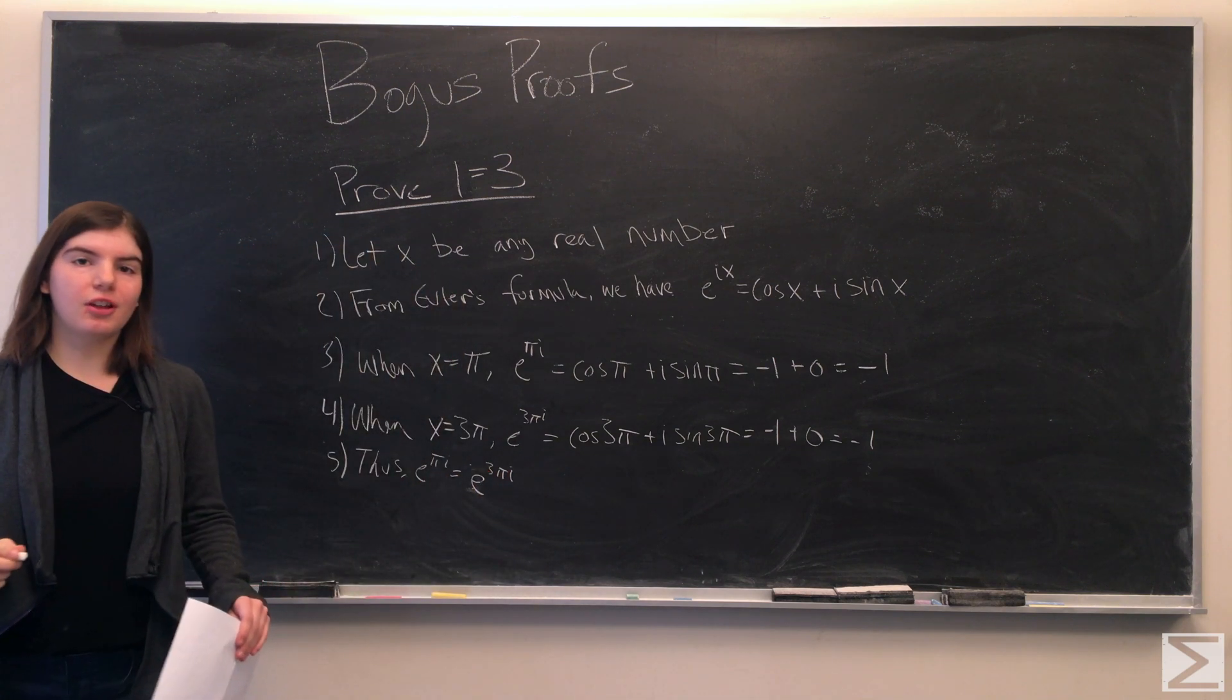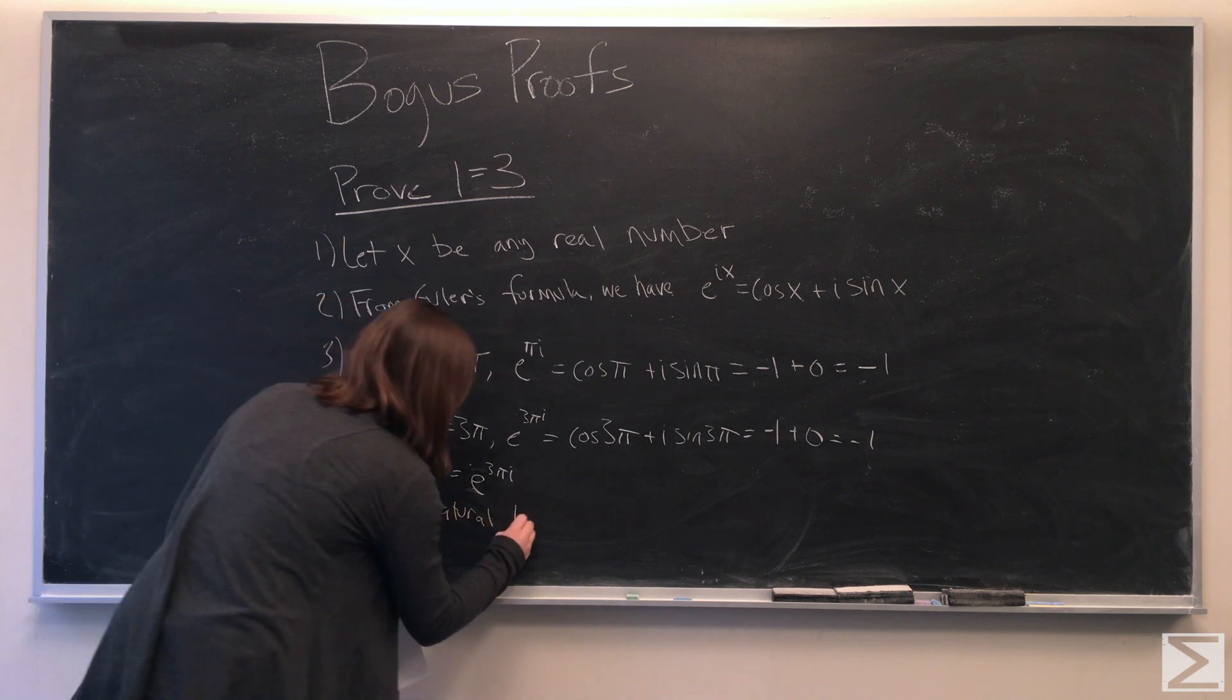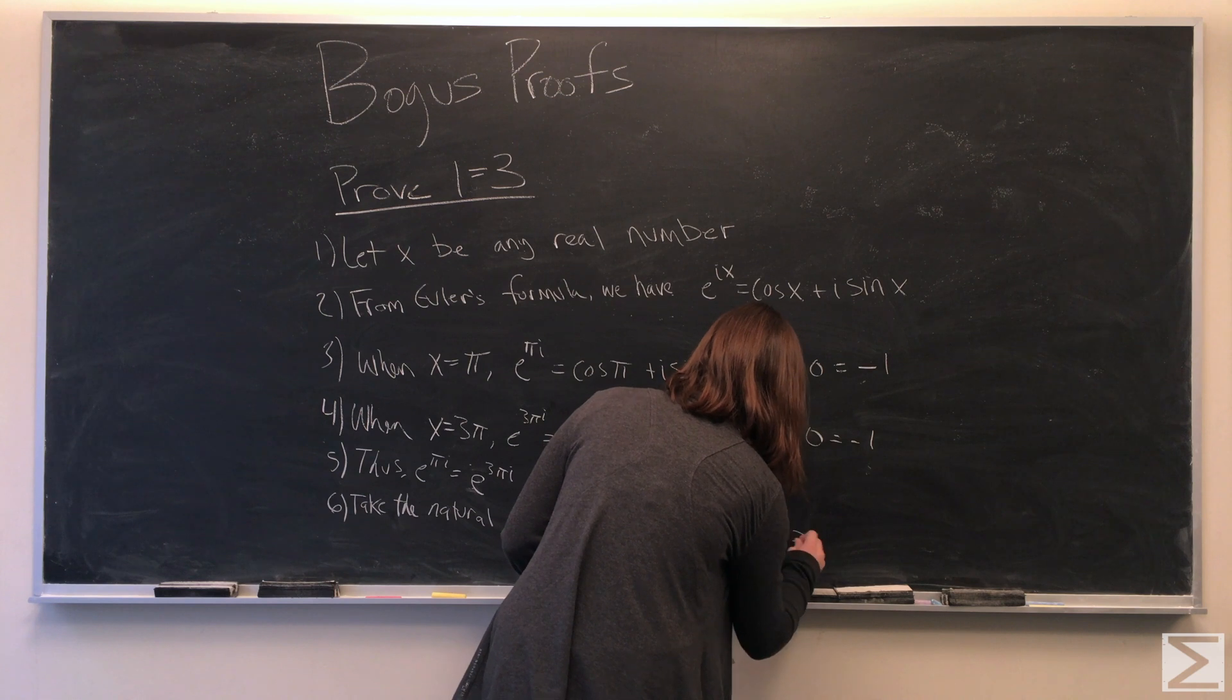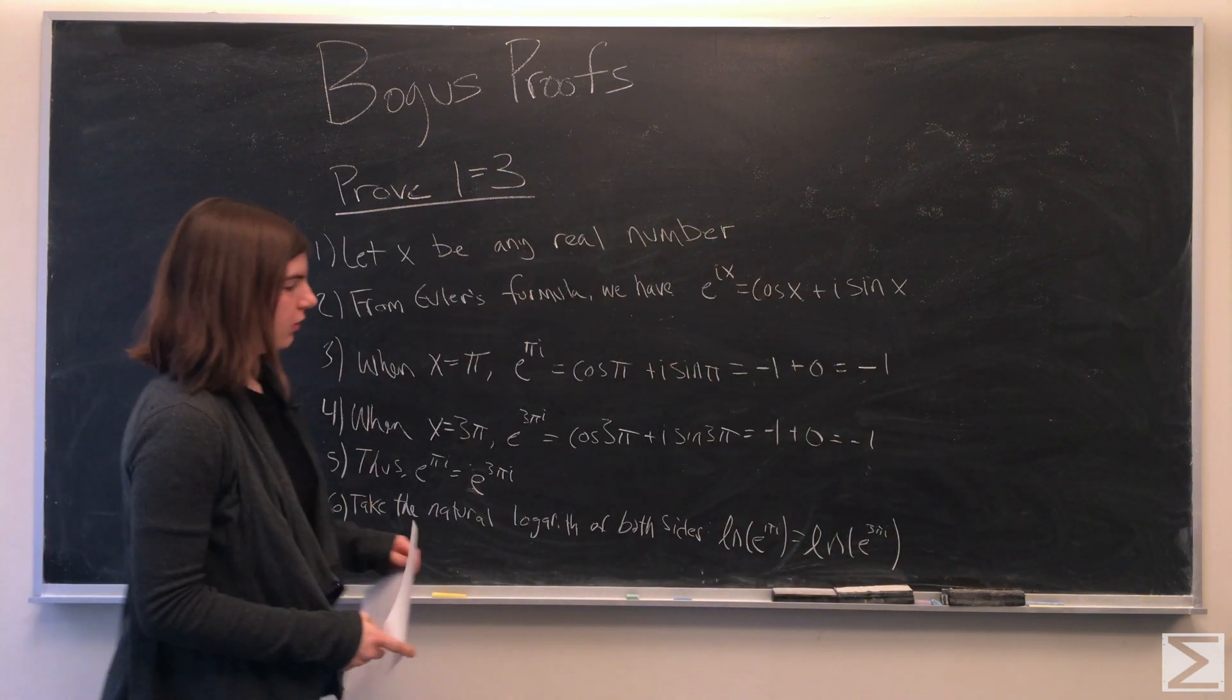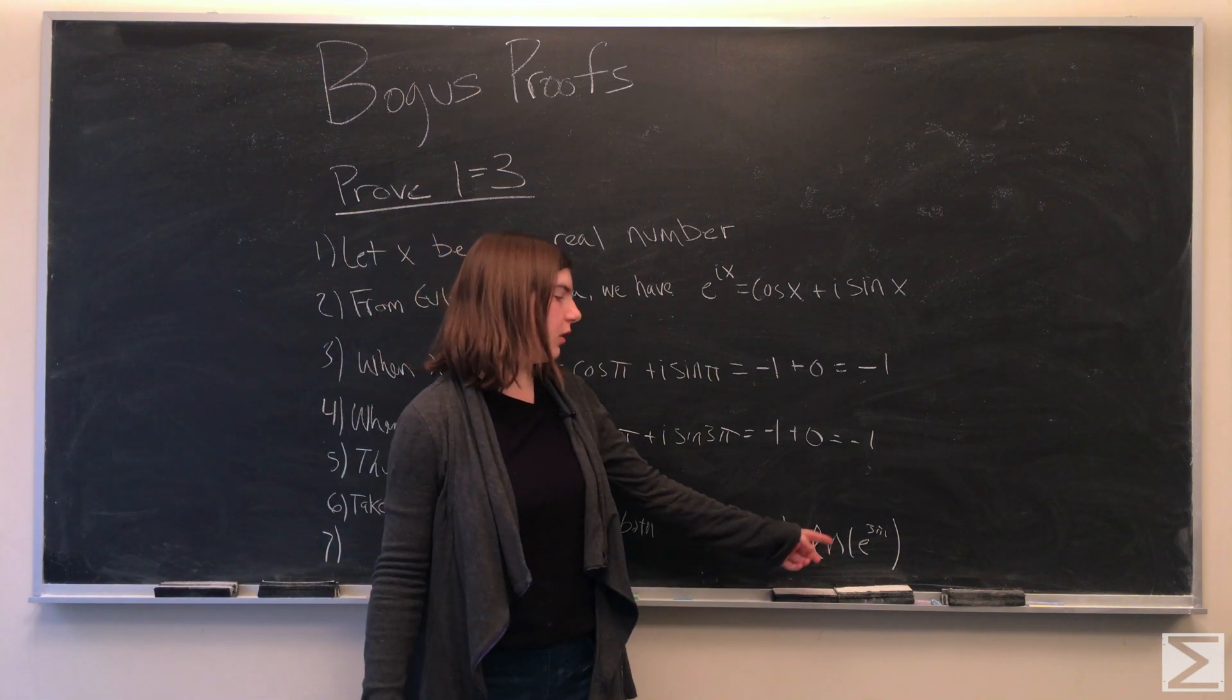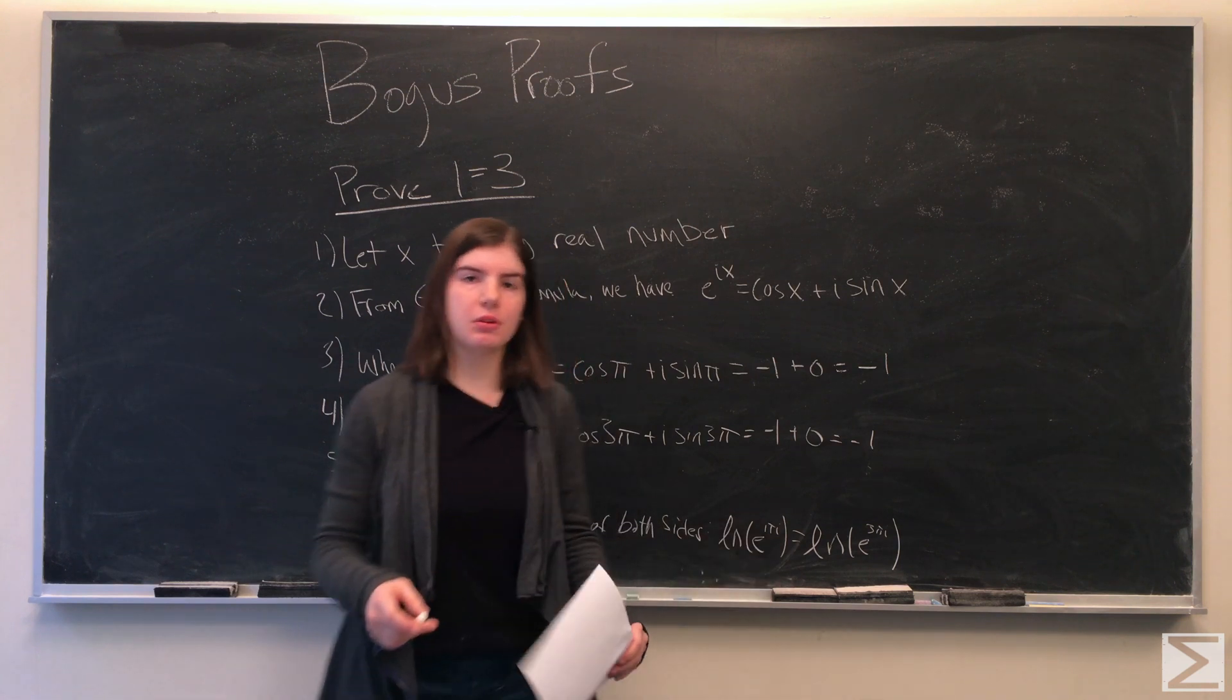We're going to take the natural log of both sides. So we have the natural log of e to the pi i is equal to the natural log of e to the 3 pi i, and this reduces to pi i is equal to 3 pi i.